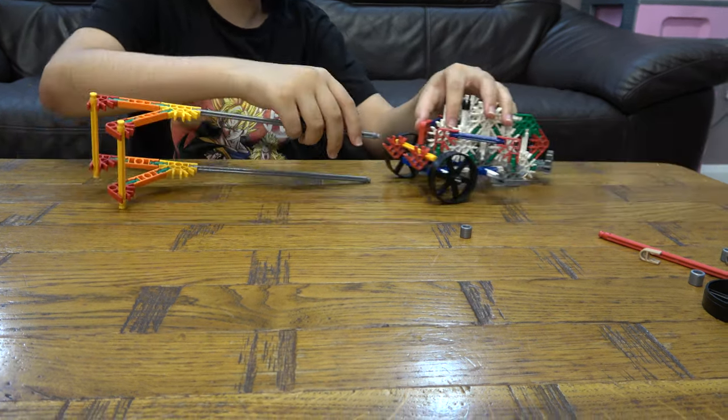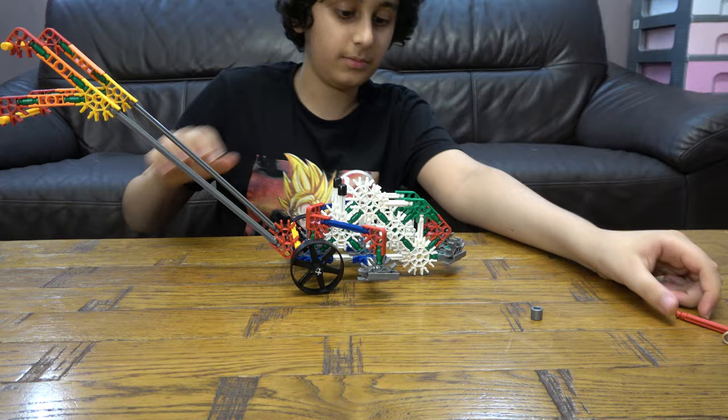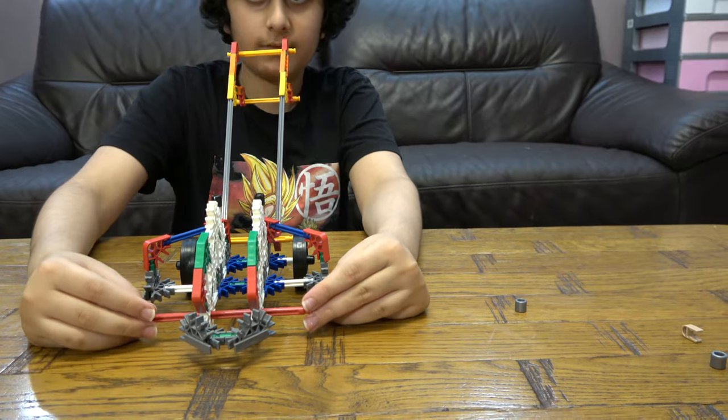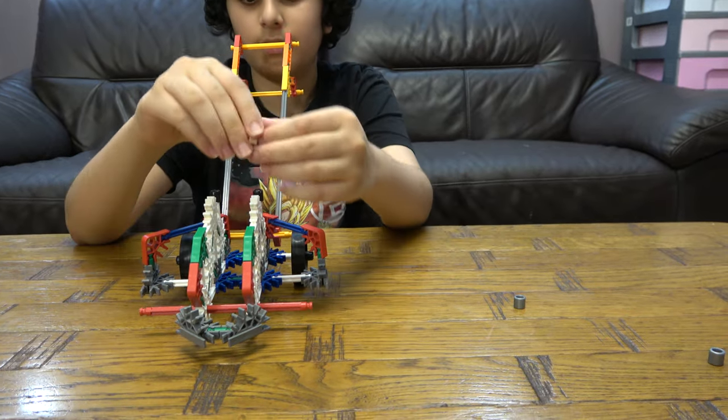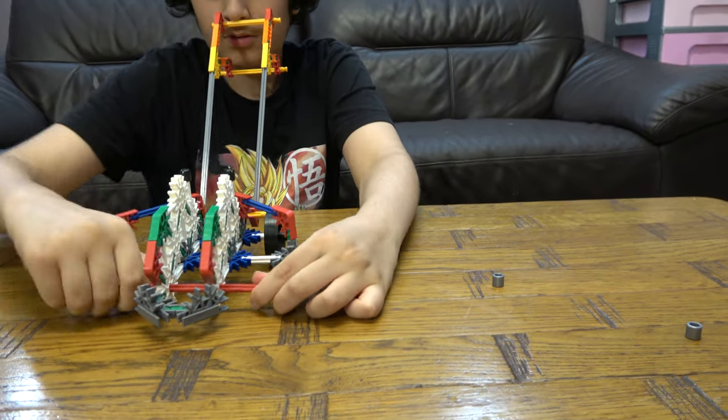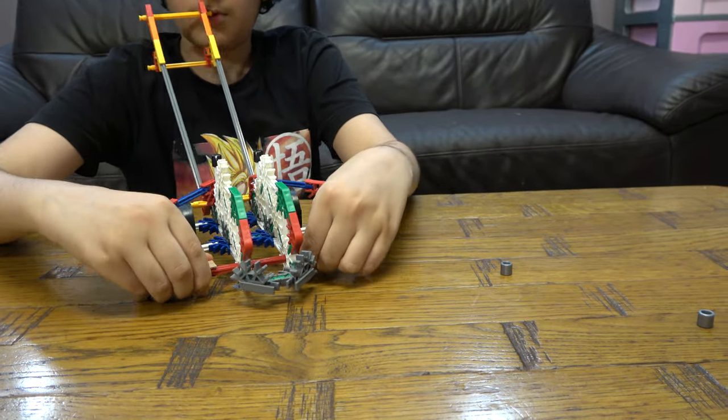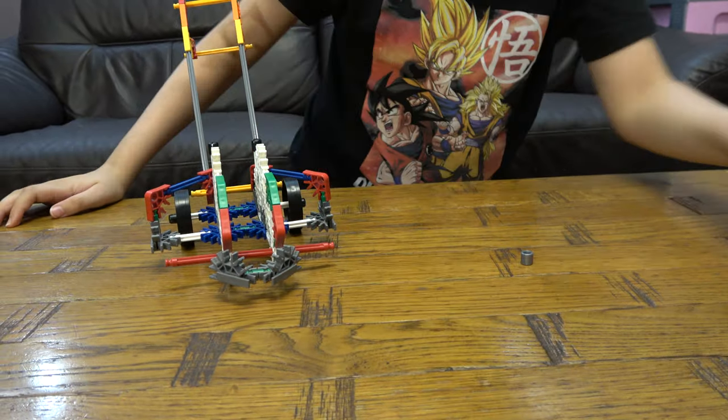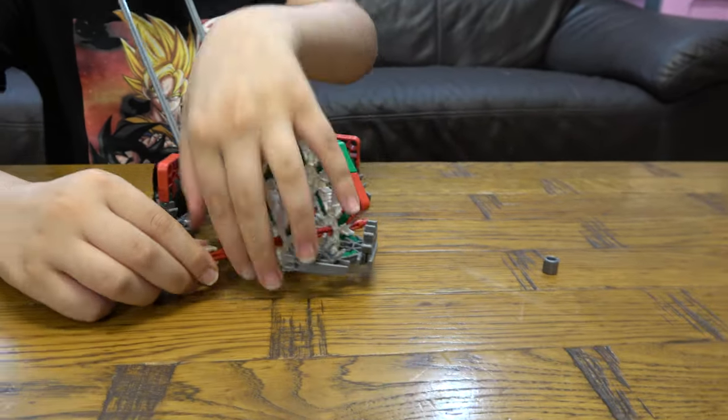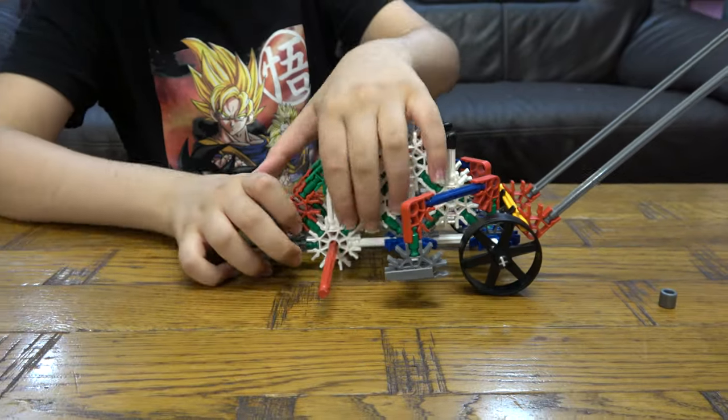Then next we're going to finish it off by attaching this to this, and now for the front wheels. So for the front wheels we're going to get that there, like so. We're going to get that like that, and the same thing for the other side.